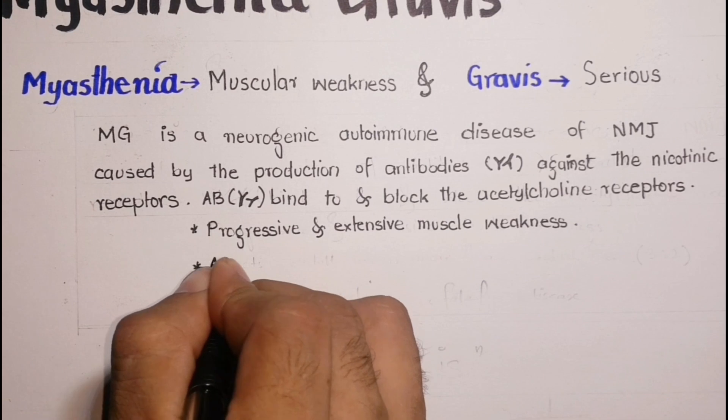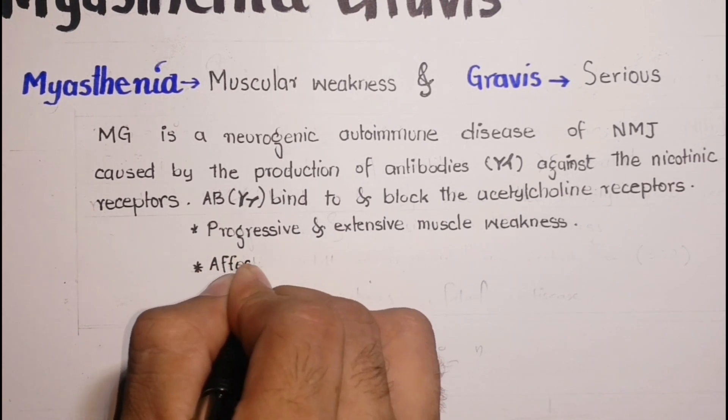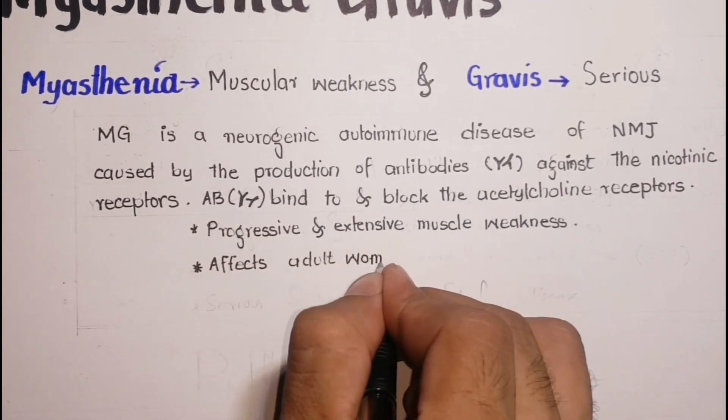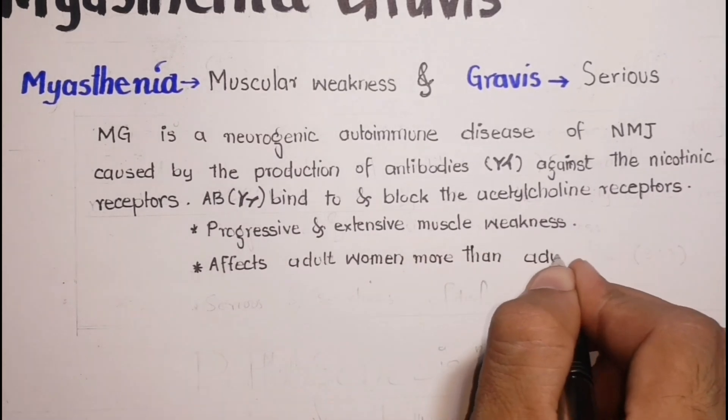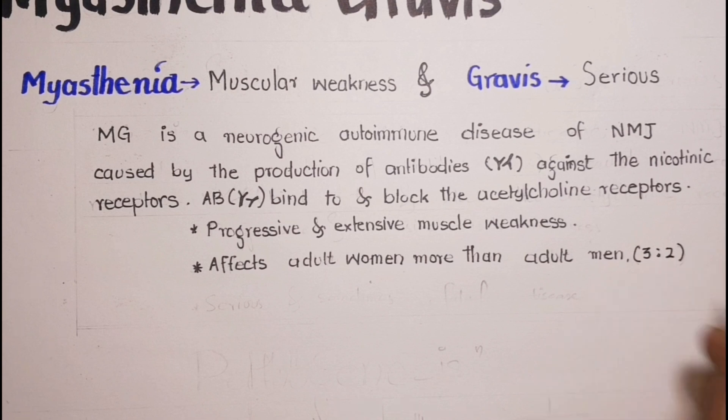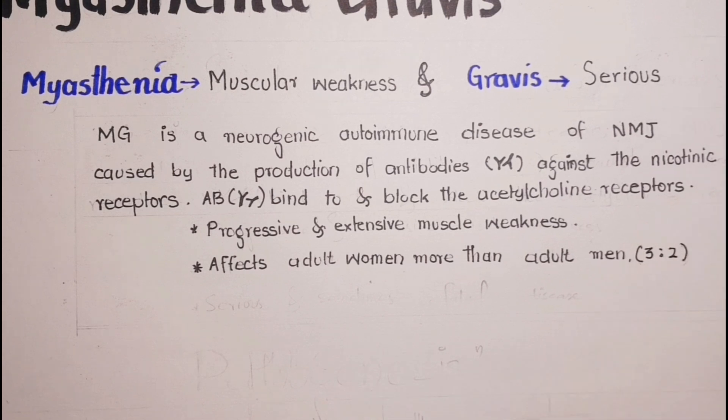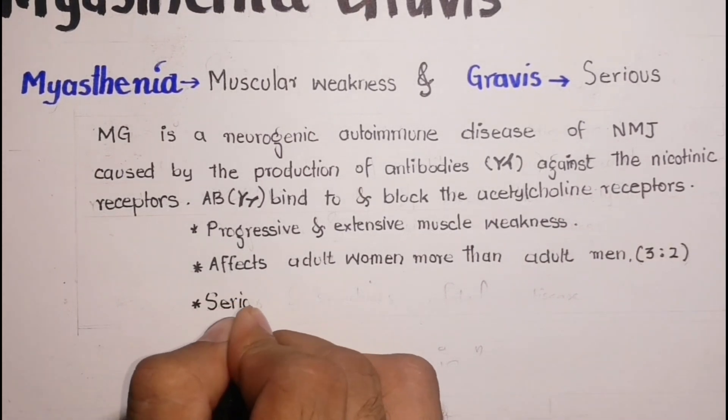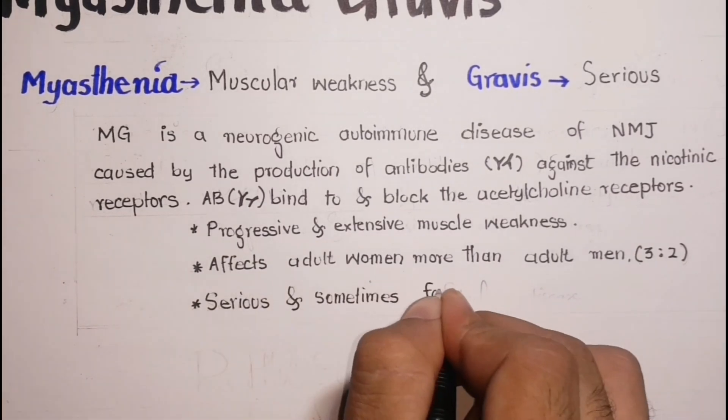This autoimmune condition of unknown origin affects adult women more often than adult men in the ratio of 3 to 2. This may occur at any age but usually affects those between 20 and 40. It is a serious and sometimes fatal disease.